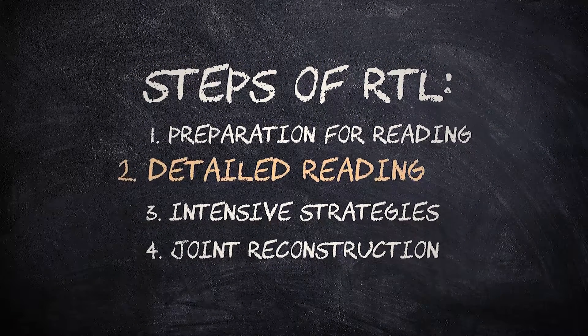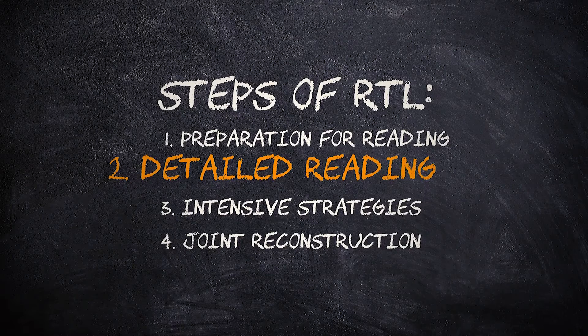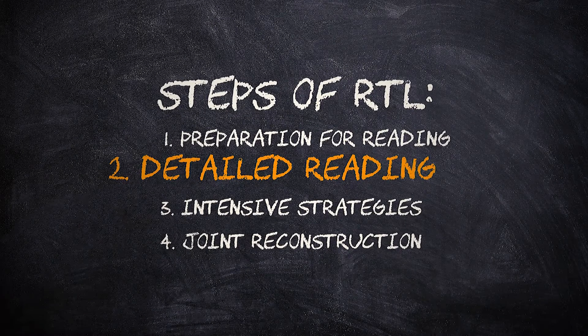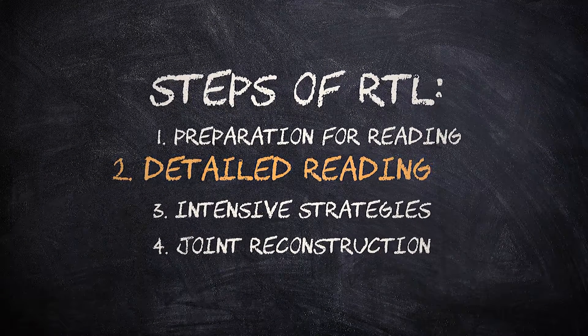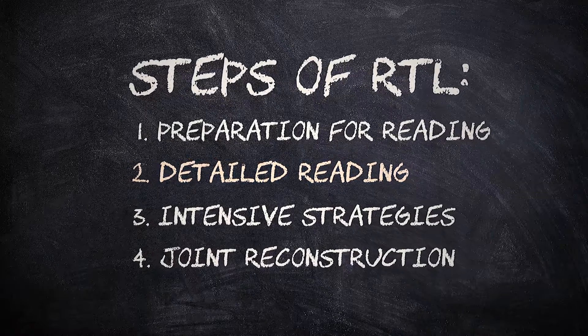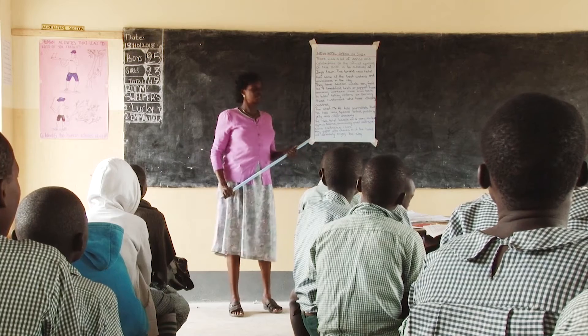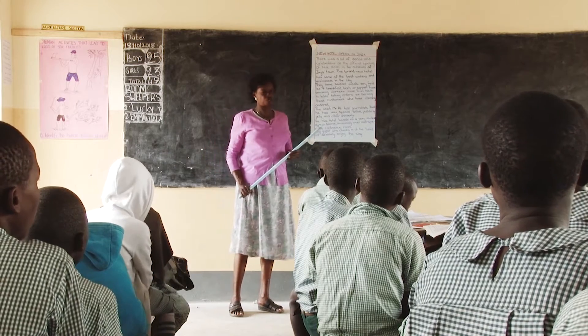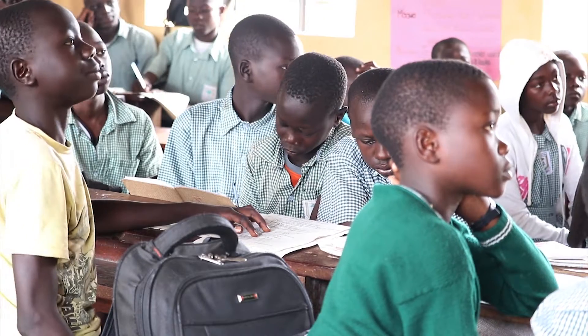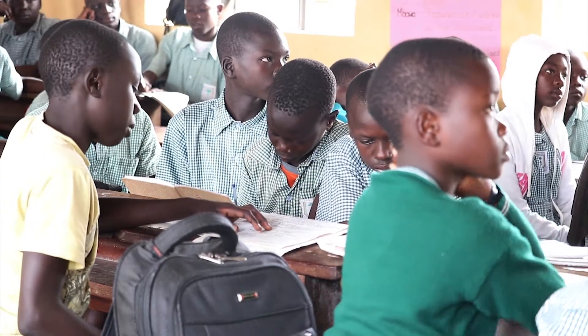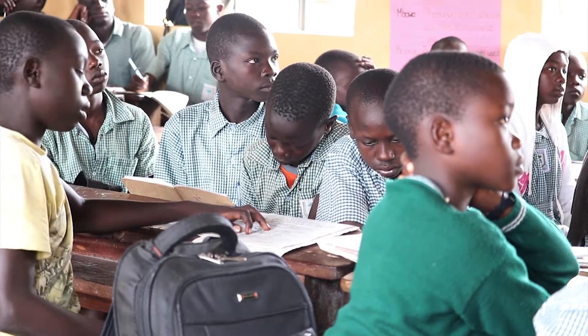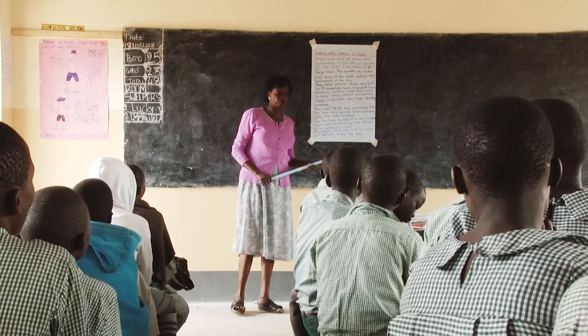The second step is detailed reading. It is important because it helps the teacher know the children who can read and the children who cannot read, so that the teacher is able to support those children. This is our story that we are going to read today. I'm going to read through the story, then later on we shall read together as usual.